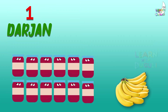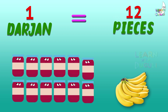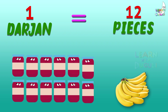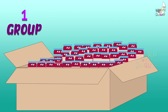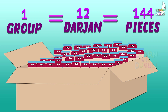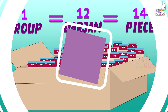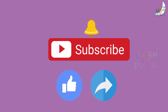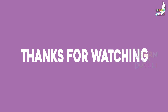1 dozen is equal to 12 pieces. 1 gross is equal to 12 dozen, which equals 144 pieces.